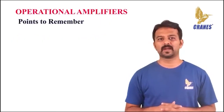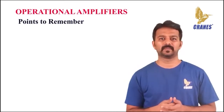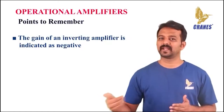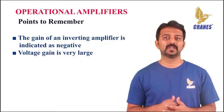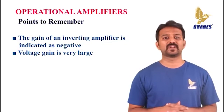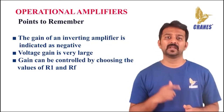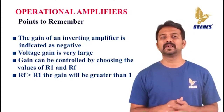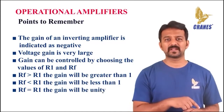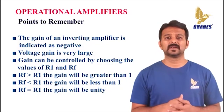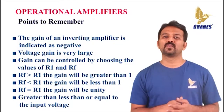There are a few points to remember about an inverting amplifier. An inverting amplifier employs negative feedback and produces an inverted output with respect to the input. The gain is indicated as negative. The voltage gain is independent of the op-amp open loop gain, and depends only on the resistor values R1 and Rf. If Rf is greater than R1, gain is greater than 1. If R1 is greater than Rf, gain is less than 1. If Rf equals R1, gain is unity. Thus, the output voltage can be greater than, less than, or equal to the input voltage in magnitude, and it is always 180 degrees out of phase.